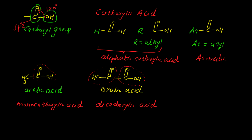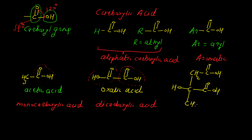We can also write the structure for tricarboxylic acid. The example is citric acid. Its structure is: CH2 — C double bond O — OH, attached to a central carbon which also has a second carboxyl group and a third carboxyl group. In this compound, three carboxyl groups are present, and therefore it is known as tricarboxylic acid.